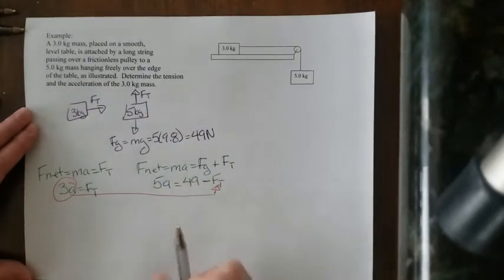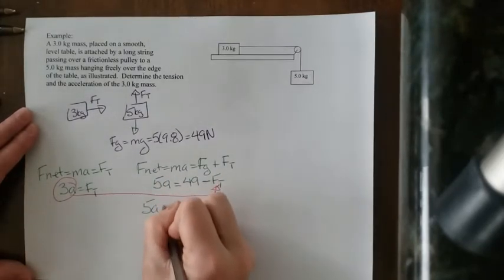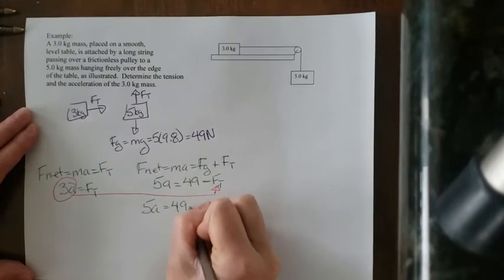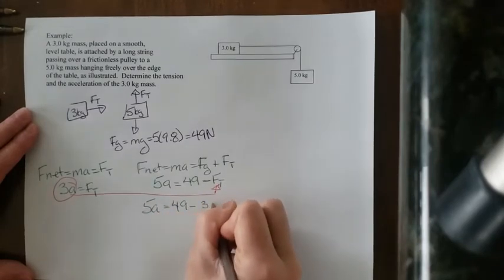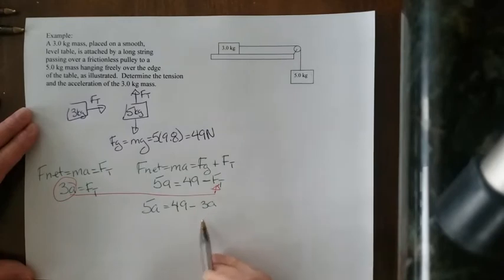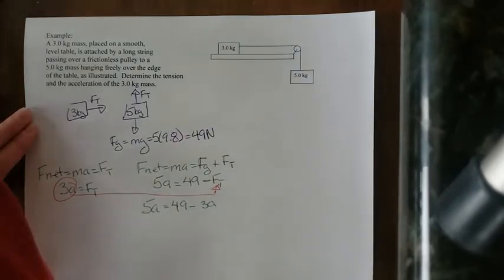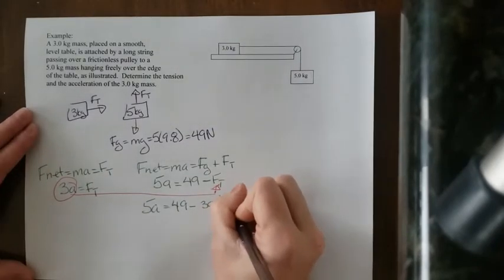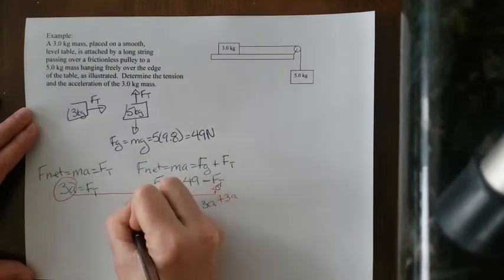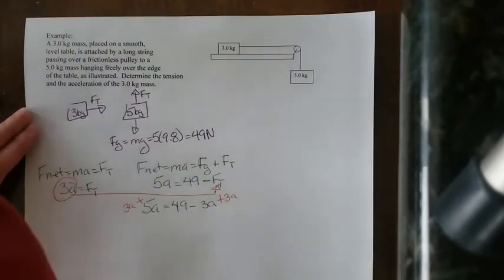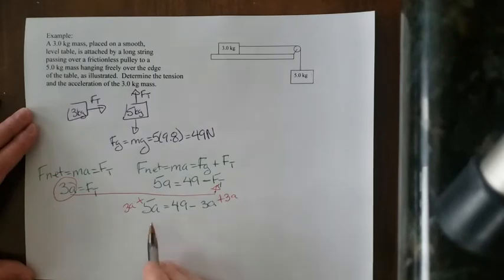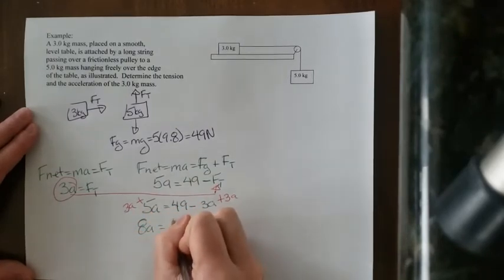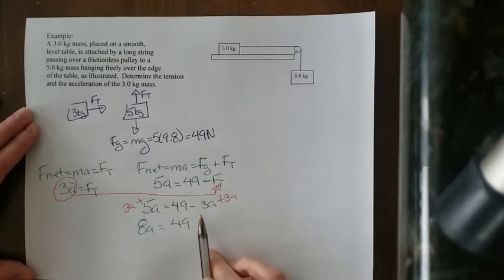Let's keep going. So I'm going to solve this equation now. I have 5A minus 3A is equal to 49 minus 3A. To get the minus 3A onto the other side, I'm going to add 3A to both sides. 3 plus 5 is 8. So I have 8A on this side is equal to 49. 3A minus 3A just cancels out.